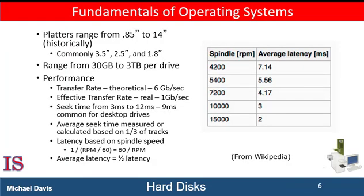A disk drive motor spins at a high speed. Most drives rotate at 60 to 250 times per second, specified in terms of rotations per minute. Common drives spin at 5,400, 7,200, 10,000, and 15,000 RPM. Some drives power down when not in use and spin up upon receiving an input-output request.